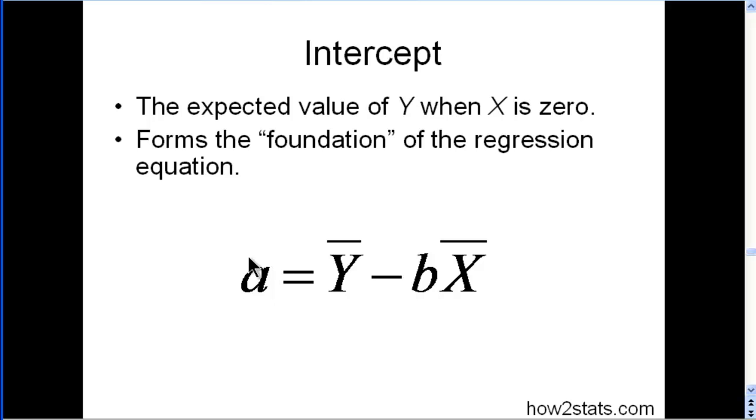This is the formula for the intercept. So a, or alpha, equals the mean of Y (in this case colds) minus the product of the slope by the mean of X (which is stress). We've already solved for the slope, and now we only have to solve this very simple equation to get the intercept.